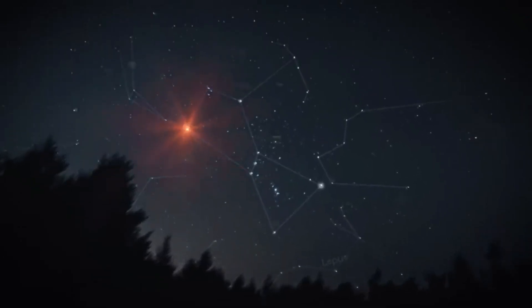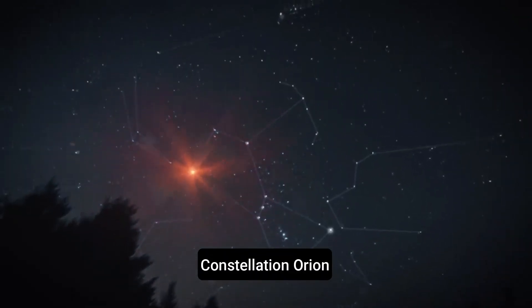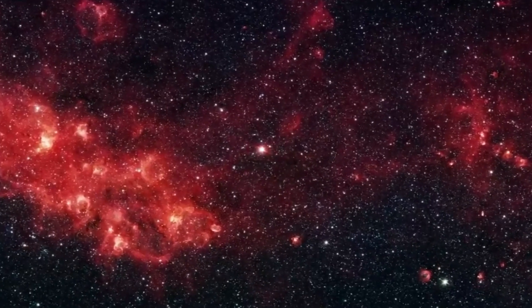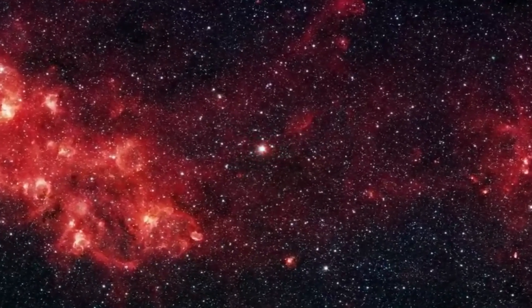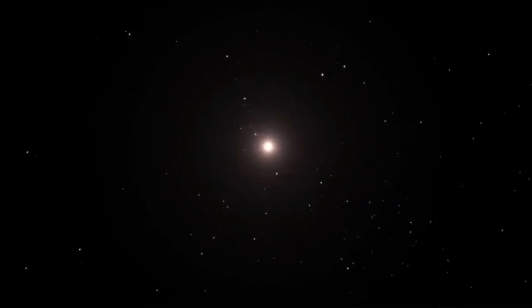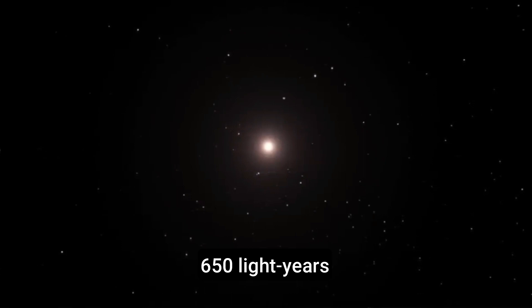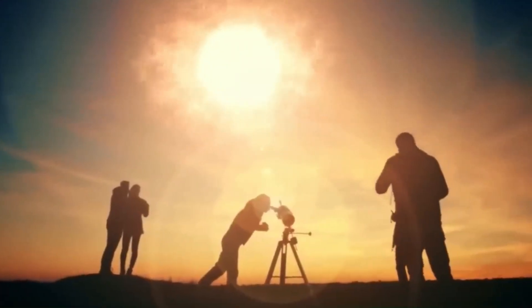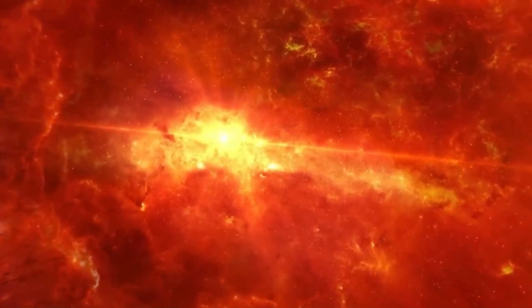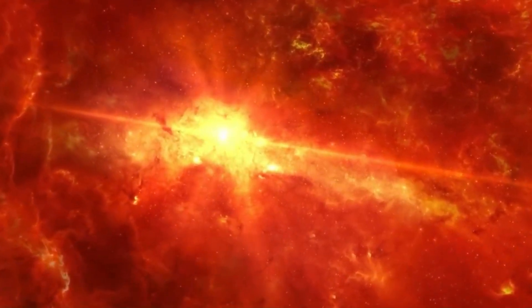This well-known red star in the constellation Orion surprised scientists when, in late 2019 and early 2020, it went through the strange Great Dimming event and got darker than it's been in over a century. The star in Orion is about 650 light years from Earth. Betelgeuse Status, a Twitter account that keeps track of the star's behavior and changes, says that the star's brightness has recently risen.